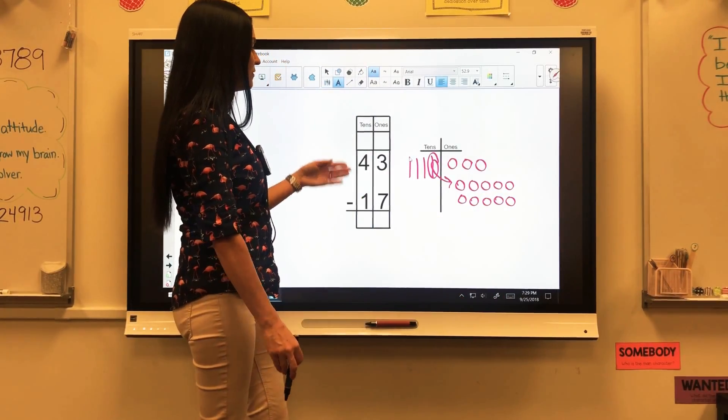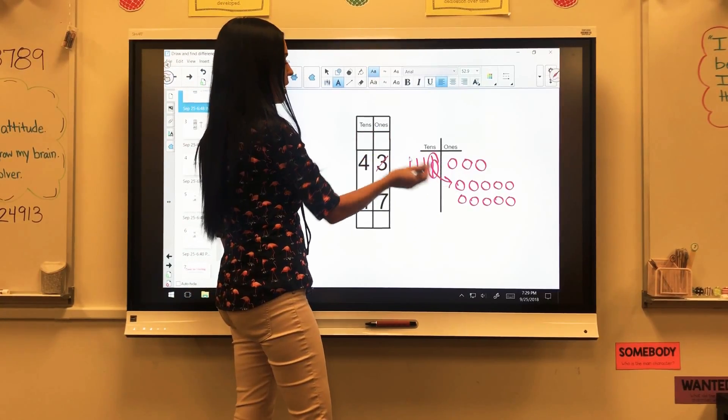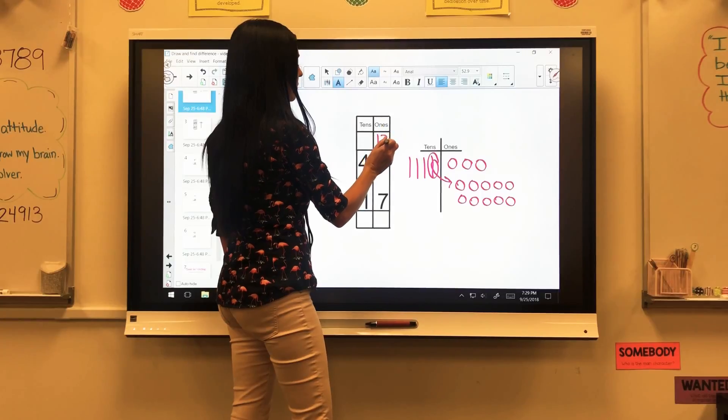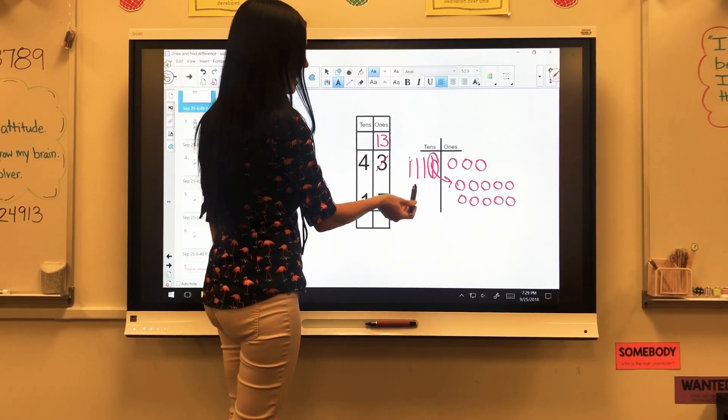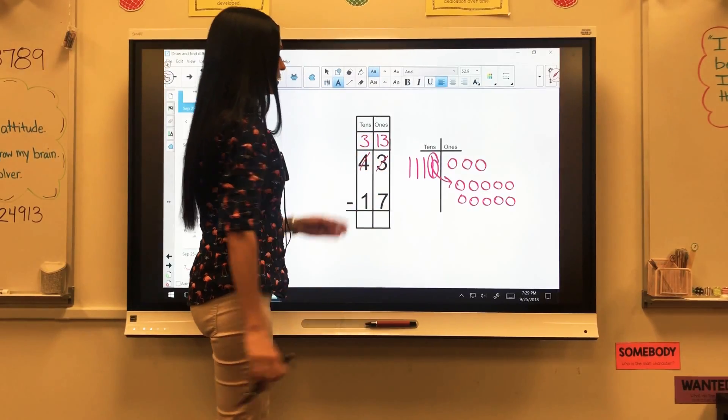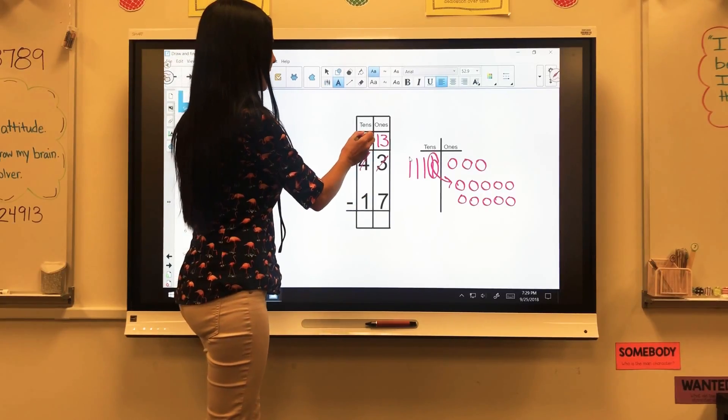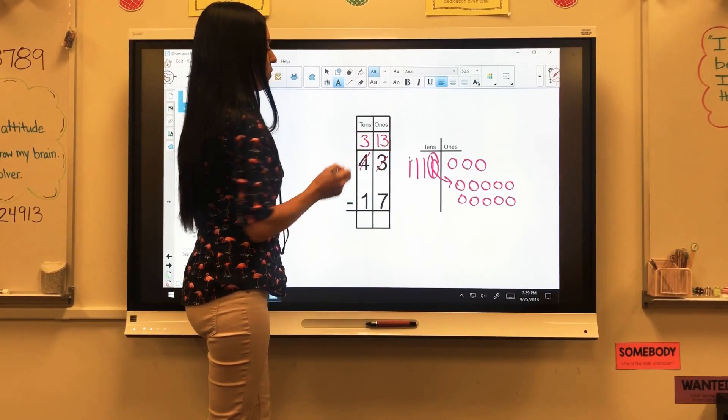Now I need to show what I've done. So I've taken my 3 and I don't have 3 ones anymore. I have 13 ones now. And my 4 tens, I don't have 4 anymore. I have 3 now. So you're going to take your 3 and make it a 13 and the 4 a 3 because that 10 from here is now over here.